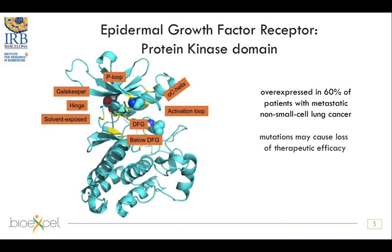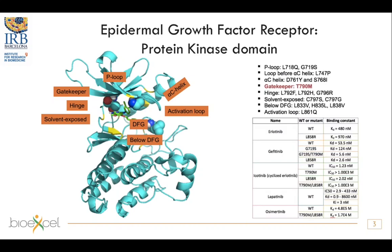The receptor is also overexpressed many times — 60% of patients with metastatic non-small cell lung cancer have it overexpressed. Mutations may cause loss of therapeutic efficacy, so it's critical to understand and to be able to predict whether or not a mutation, for instance a new mutation, will create resistance or not. We have collected experimental data shown here in the table with binding affinity, and there are mutations spread around the active site, but also far away from it.